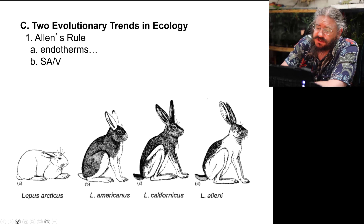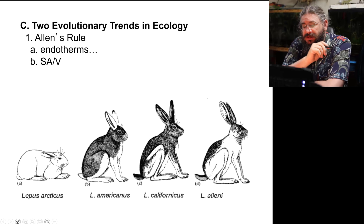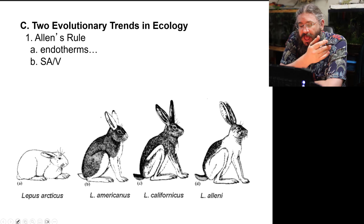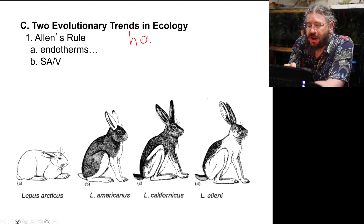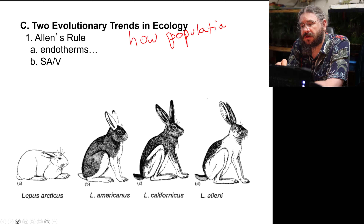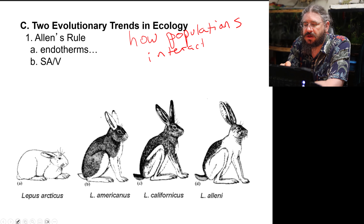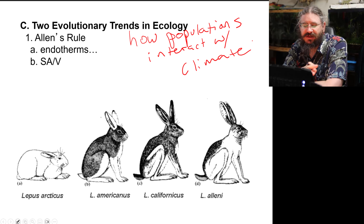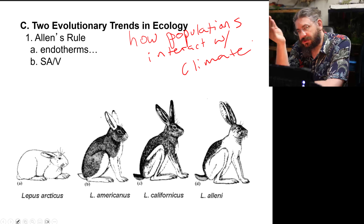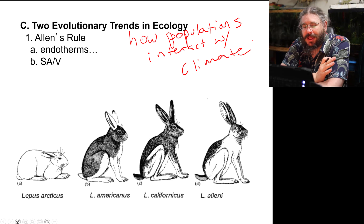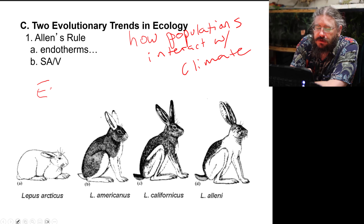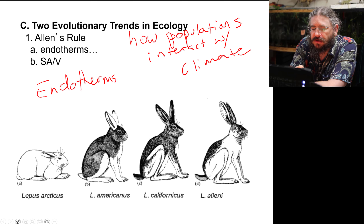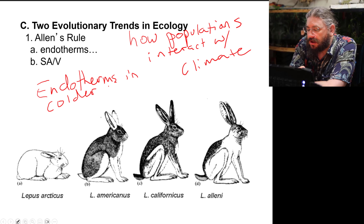The first rule to discuss is Allen's Rule, which is related to population biology and how populations interact with climate. Allen's Rule is about endotherms — so we're already restricted to birds and mammals — and it has to do with extremities. Endotherms in colder climates generally have shorter or smaller extremities.